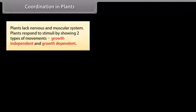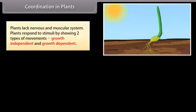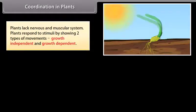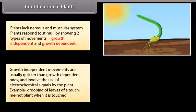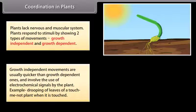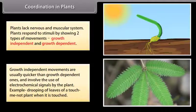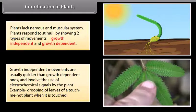Coordination in plants: plants lack a nervous and muscular system. Plants respond to stimuli by showing two types of movements — growth independent and growth dependent. Growth independent movements are usually quicker than growth dependent ones and involve the use of electrochemical signals by the plant. Example: drooping of leaves of a touch-me-not plant when it is touched.